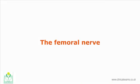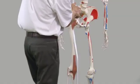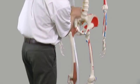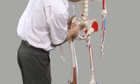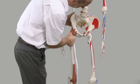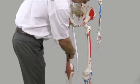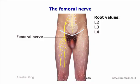The femoral nerve starts from L2, L3, and L4 nerve roots. It descends within the fibers of the psoas major muscle, then between the iliacus muscle, to emerge under the inguinal ligament with the other structures of the neurovascular bundle. It principally supplies the quadriceps femoris muscles.